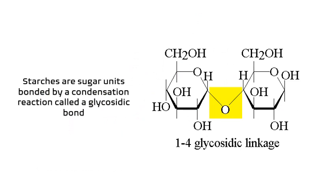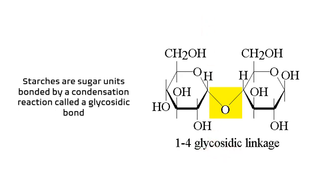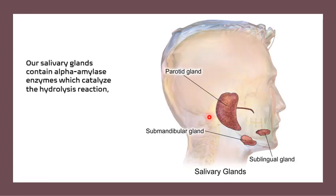In order to create those long branches of simple sugars, starches are units of sugars that are bonded by a condensation reaction called a glycosidic bond.